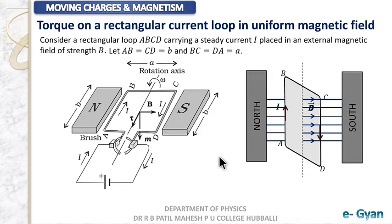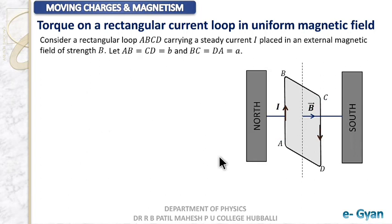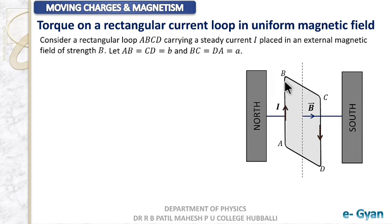Let us keep things simple by using only a single magnetic field line. Since this is a three-dimensional figure, you need to observe everything keenly. Let us find the force on every segment of the loop. We divide the rectangular loop into four segments: AB, BC, CD, and DA, and study each one.